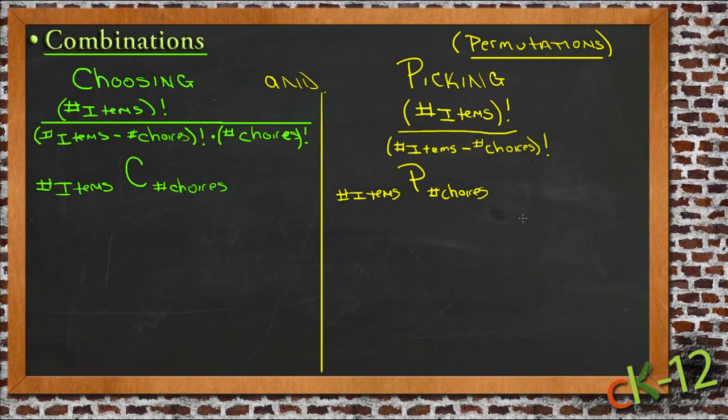As an example, let's use a situation where we have four items and we're picking three. If we're talking about permutations, we have a 4P3 situation.